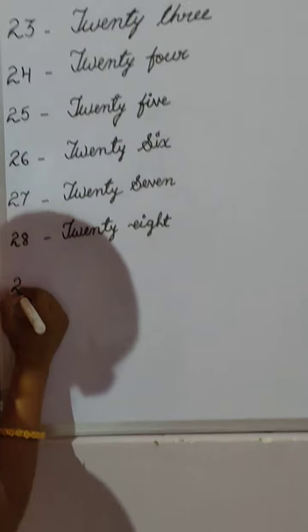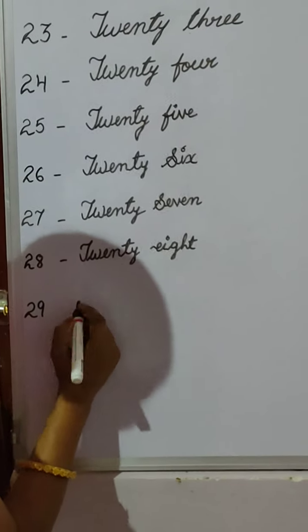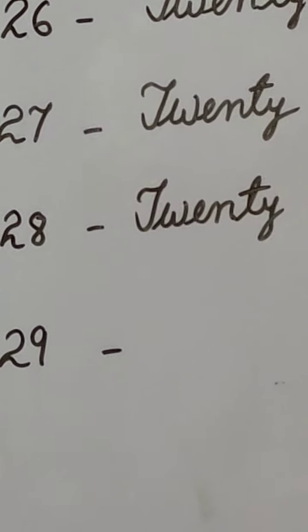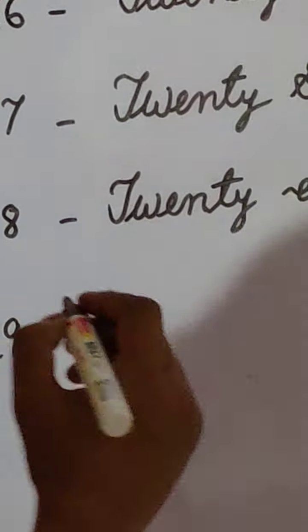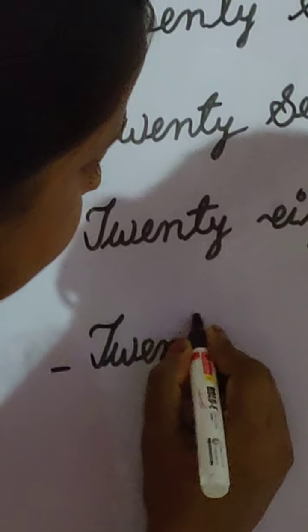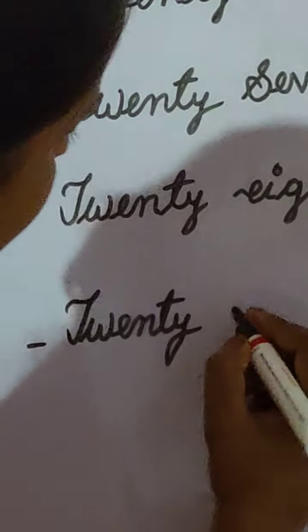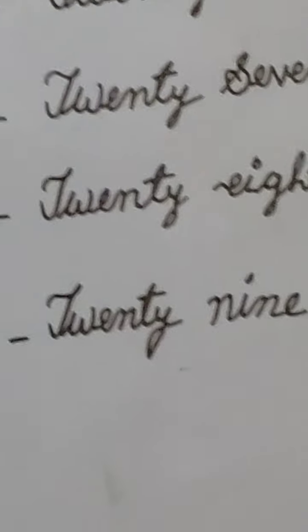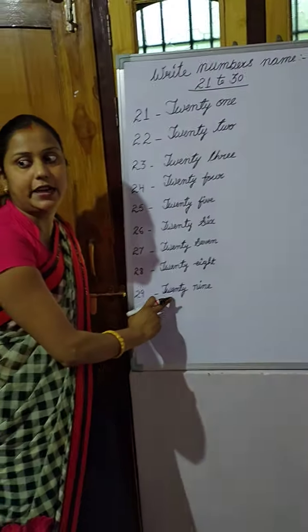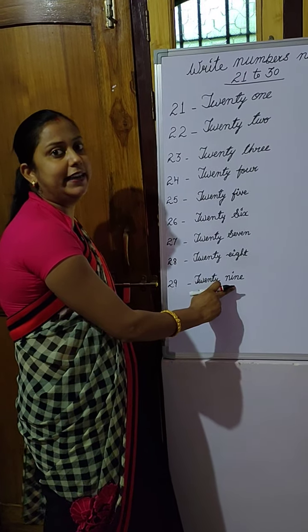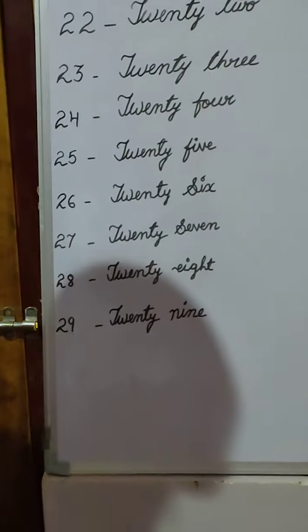Then, we have to write the spelling of 29. What is the spelling of 29, children? TWENTY — T, W, E, N, T, Y — 20. Then 9 — NINE — N, I, N, E — 9. TWENTY — T, W, E, N, T, Y — then NINE — N, I, N, E — 9. 20, 9. TWENTY-NINE.